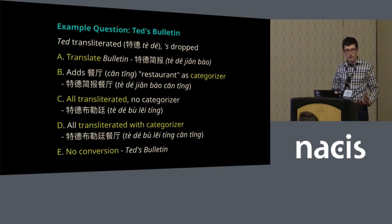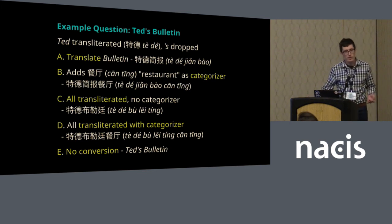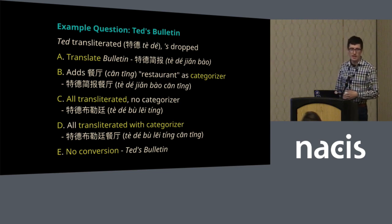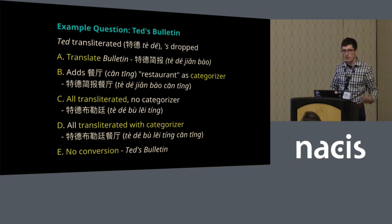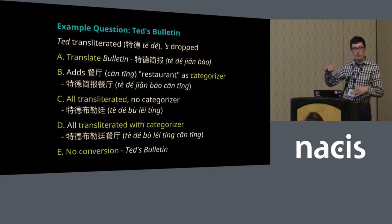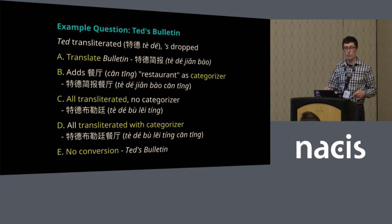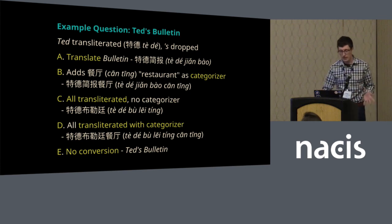The example shown was Ted's Bulletin, which is a restaurant in the D.C. area. In the name Ted's Bulletin, we always have to transliterate Ted because it's a proper name without lexical meaning. The apostrophe S gets dropped — that's a standard convention. The options ranged from translation with no categorizer, translation with a categorizer, all transliteration with no categorizer, transliteration with a categorizer, and finally no conversion.